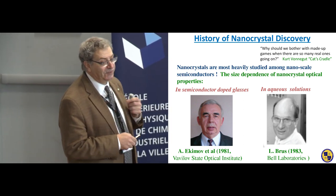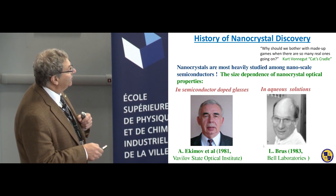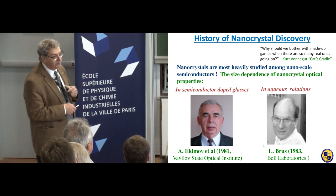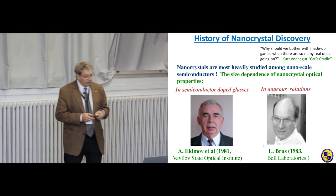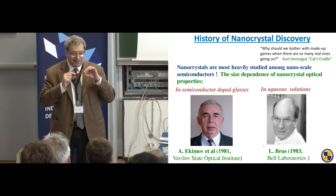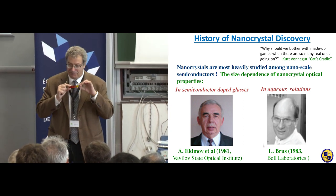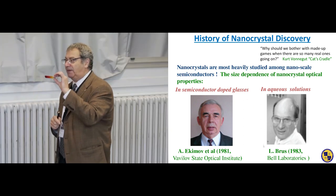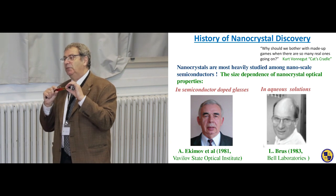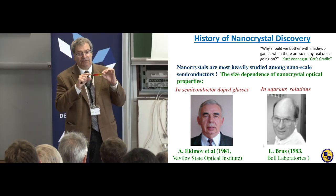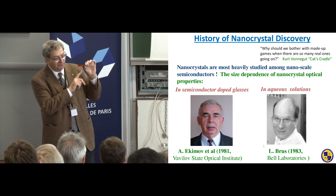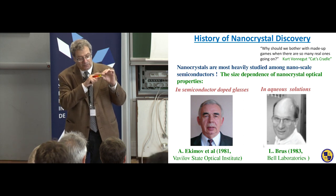This semiconductor nanocrystal was discovered in two different materials: in semiconductor-doped glasses by Alexei Ekimov at the Vavilov Optical Institute, and by Louis Brus in aqueous solution at Bell Labs. Here I want to show you this lab of glass. You can investigate this precious piece of glass for one hour. It was prepared by Alexei in 1984 and contained a homogeneous concentration of cadmium selenide. A gradient of temperature was applied during nanocrystal growth, resulting in large nanocrystals growing at the red edge and small ones on the transparent side, leading to a gradual change of color from transparent to red.